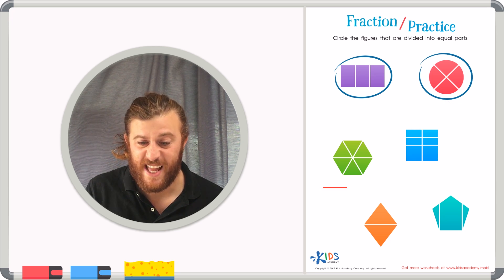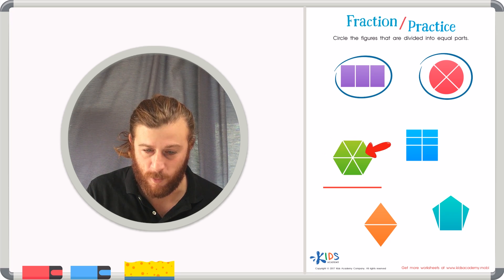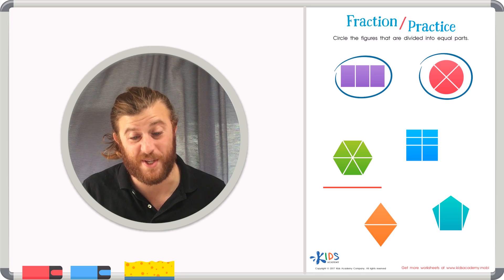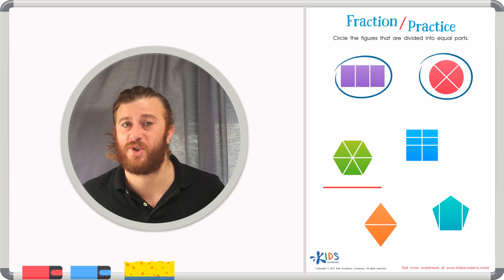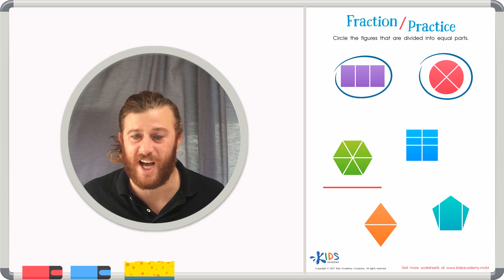Our next shape is a hexagon. It has one, two, three, four, five, six sides. In fact, this shape is actually broken up into six parts. And I can actually see six little triangles inside my hexagon. Do these triangles look to be the same size?